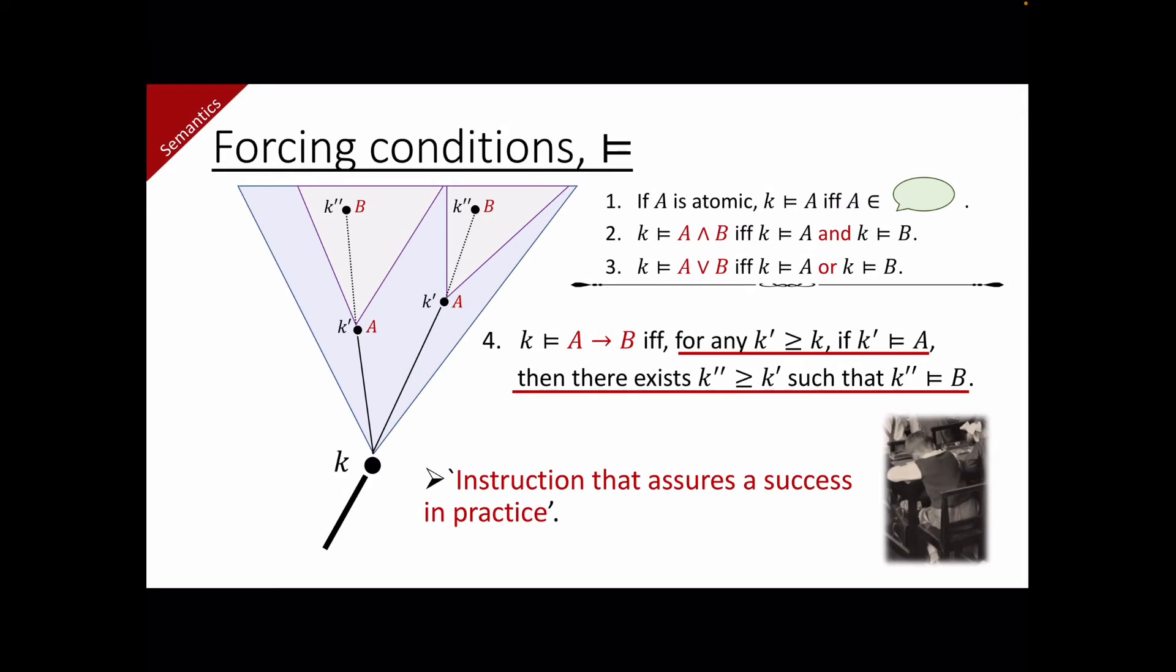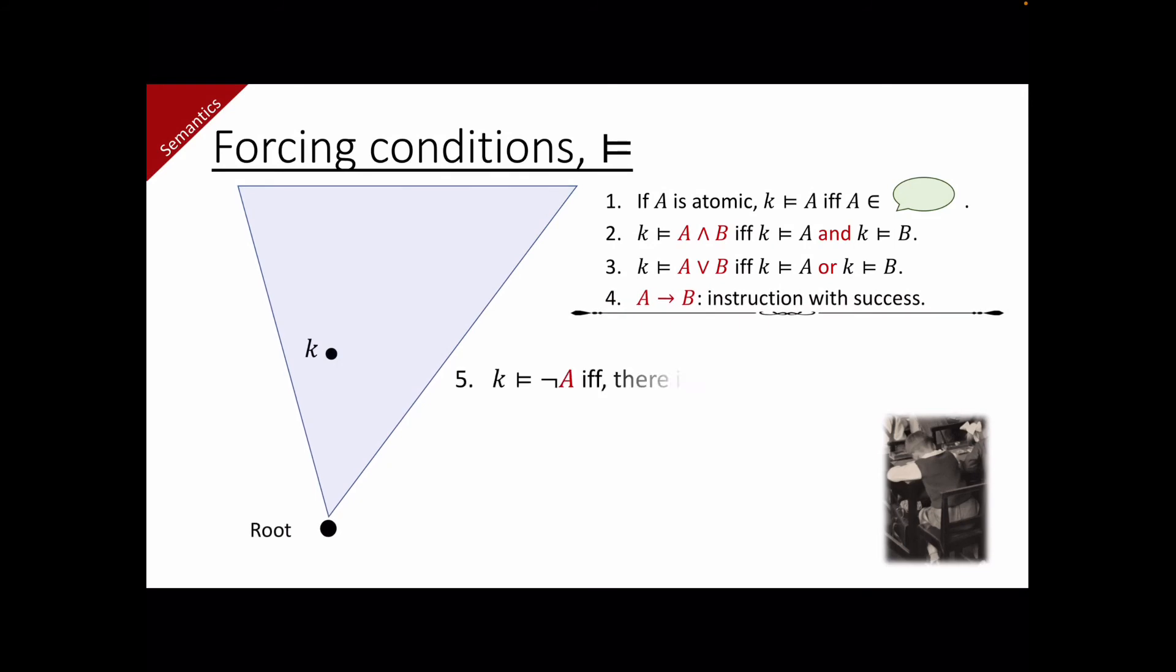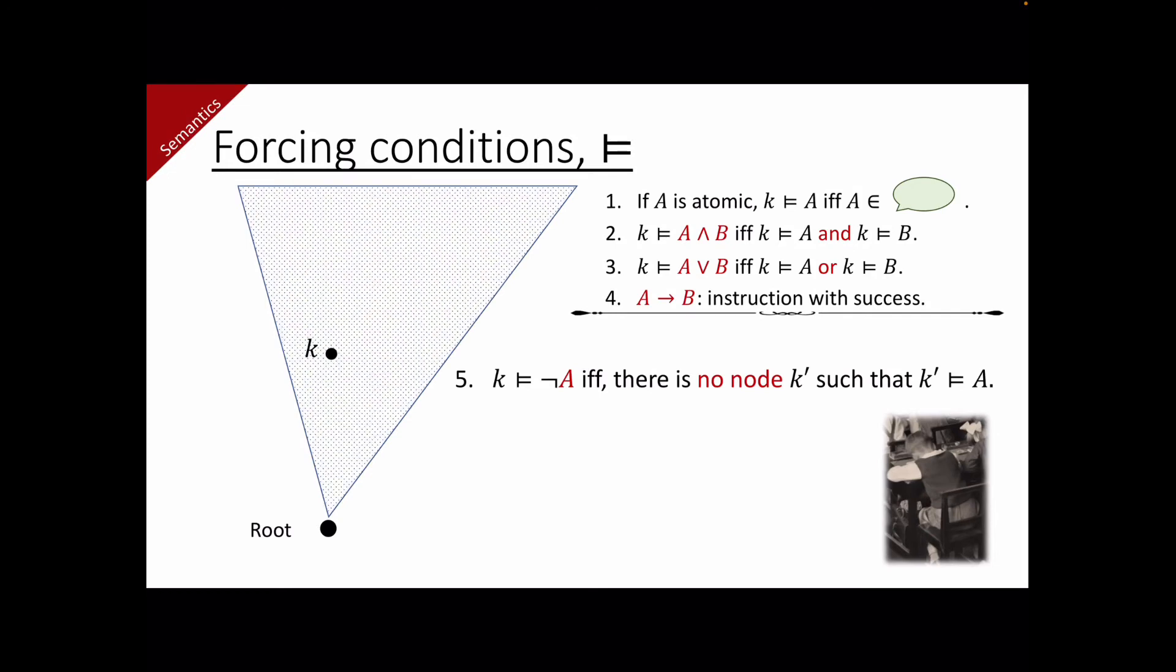This is to say that implication A to B is like an instruction that ensures success in practice. If you have found A, then with a suitable instruction, you should be able to find B in the future in practice. The negation of A holds at k, if and only if there is no node at which A holds. This is to say that no matter what path the agent may follow, there is no possibility that the agent finds A. In a sense, in this semantics, negation is global.